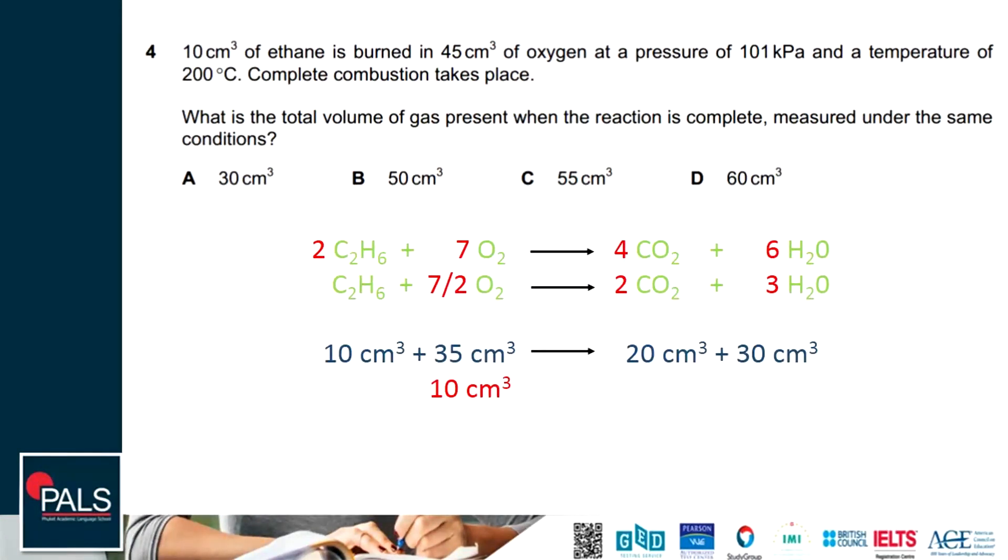We can simplify by dividing by 2. Since 10 cm³ represents 1 mole, 0.5 is 3.5 moles. So 1 mole is 10 cm³, 3.5 moles will be 35 cm³. We will have 2 moles of carbon dioxide, that's 20 cm³, and 3 moles of H₂O, that's 30 cm³.